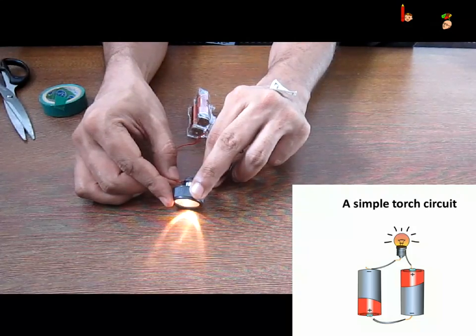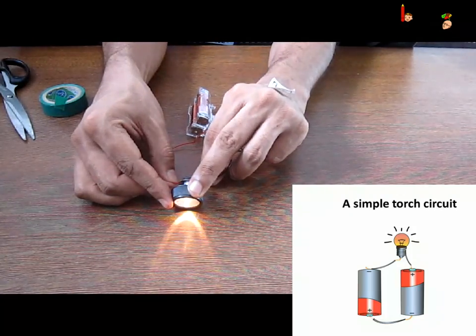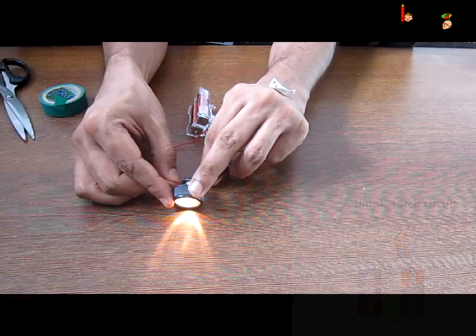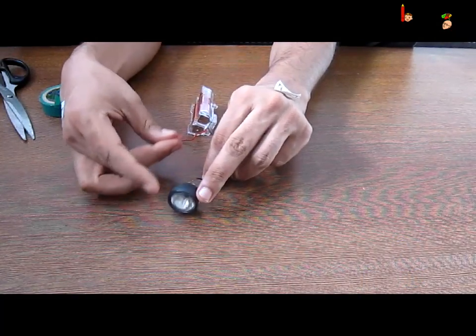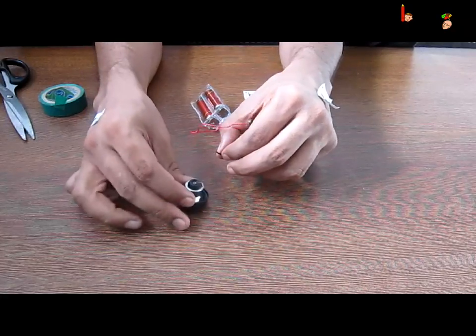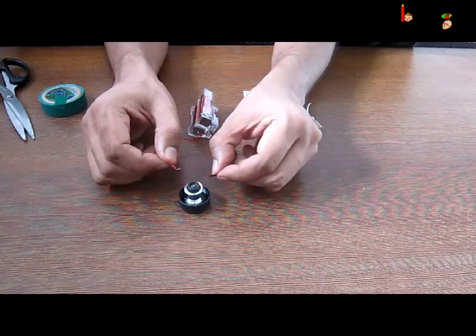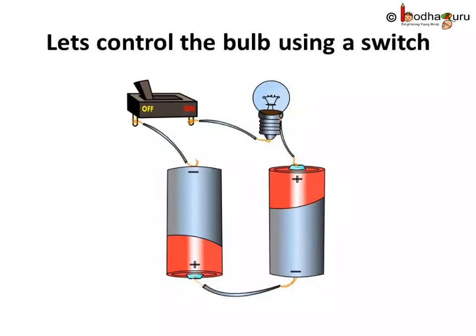Now how do I turn it off? I need to remove a wire to make it an open circuit. But will I do this kind of thing again and again? That is to turn on your light in the night, I connect the wire and to turn it off, remove the wire? No, right? So let's use a switch.